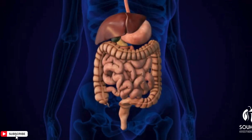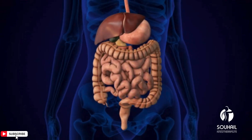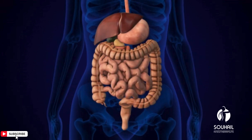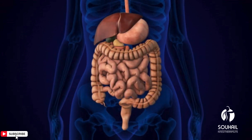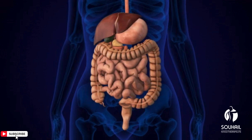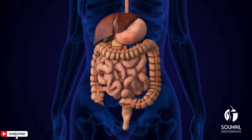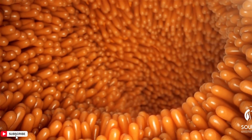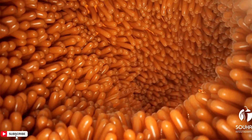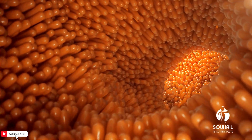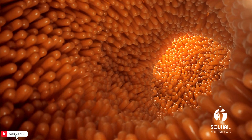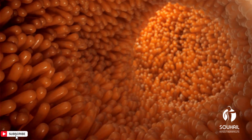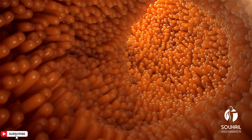Small intestine. The small intestine is where most of the digestion and absorption of nutrients occur. It is divided into three parts: the duodenum, jejunum, and ileum. Enzymes from the pancreas and bile from the liver aid in the breakdown of carbohydrates, proteins, and fats. Villi and microvilli lining the walls of the small intestine increase its surface area for efficient nutrient absorption.